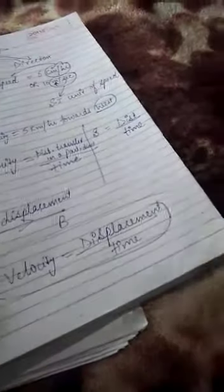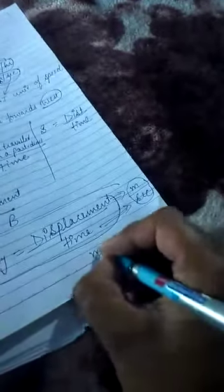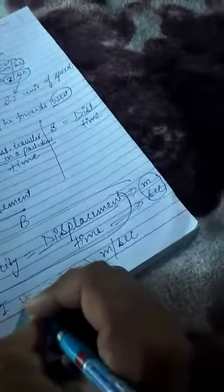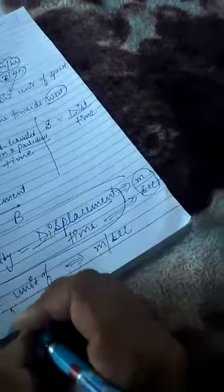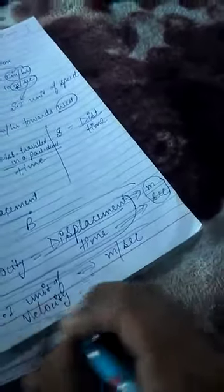Velocity of a body is the distance traveled by it in a particular direction in a given time, or it is simply defined as displacement per unit time. Displacement is defined in meters and time in seconds, so the unit of velocity is meters per second, which is the SI unit of velocity. I hope things are totally clear.